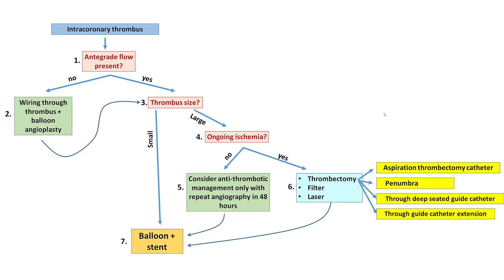The next question is what to do about it. This patient had intracoronary thrombus confirmed by OCT, good antegrade flow, a large-size thrombus, and no ongoing ischemia. Therefore, one option would be to give heparin and bring him back in 48 hours. However, we decided to proceed with PCI and do something to protect against potential embolization.